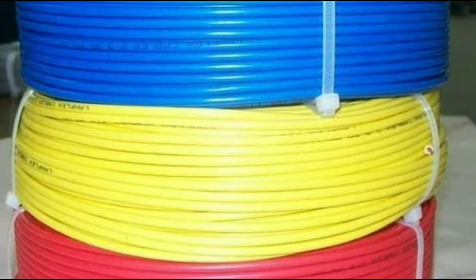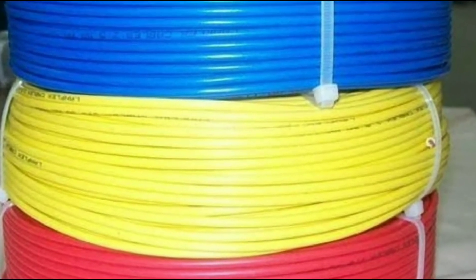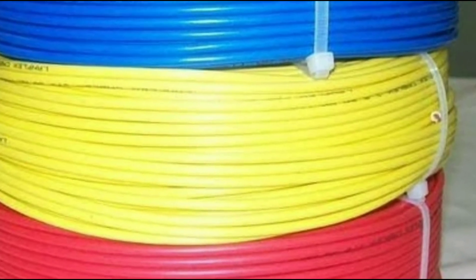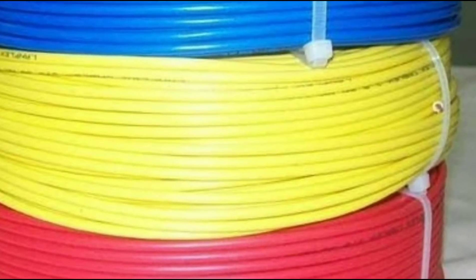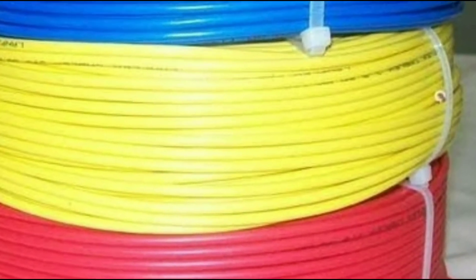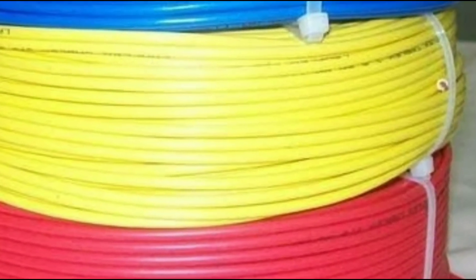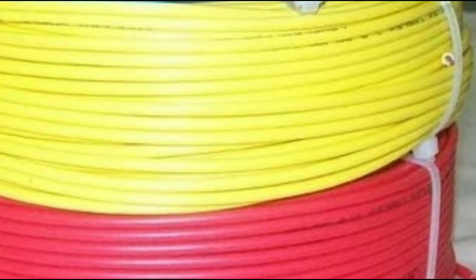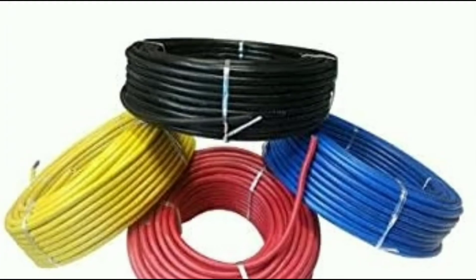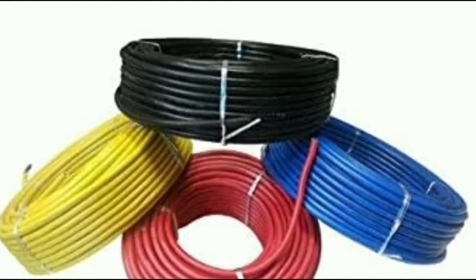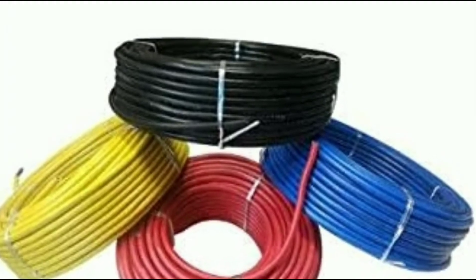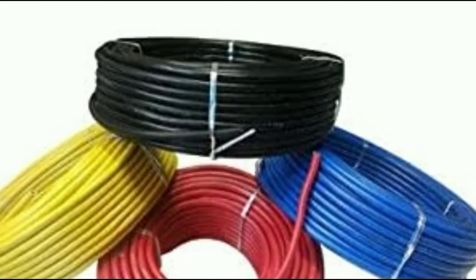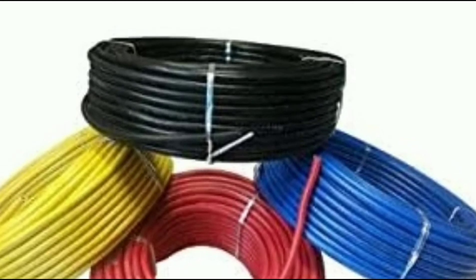Now I will explain the types of cables step by step. The first is the single core cable 3/29, which in millimeters is 1.5mm.